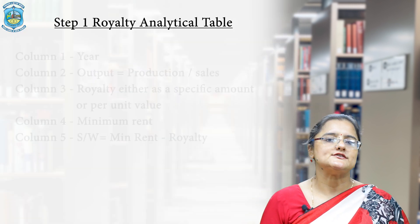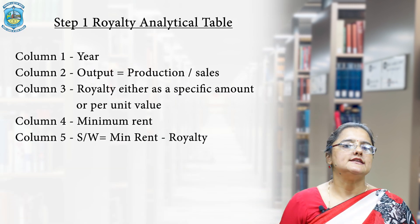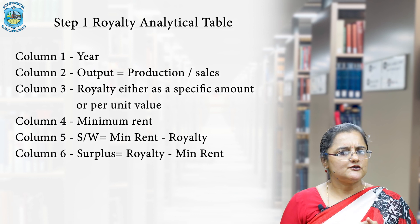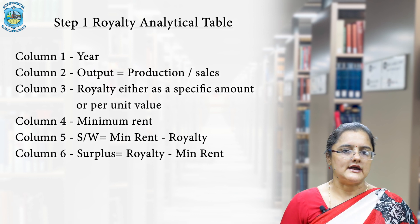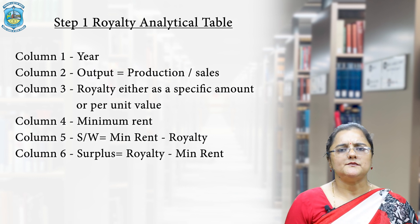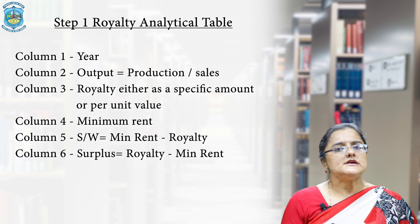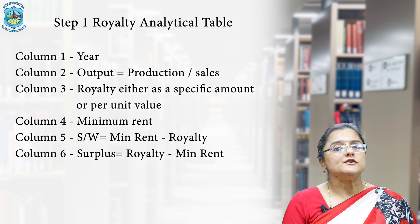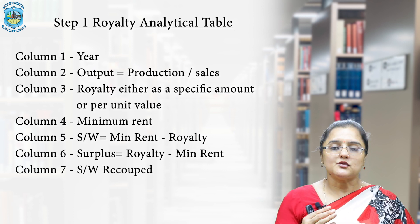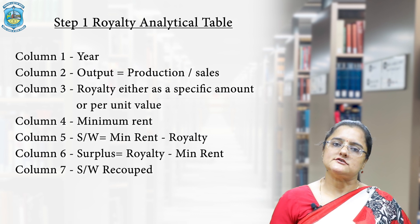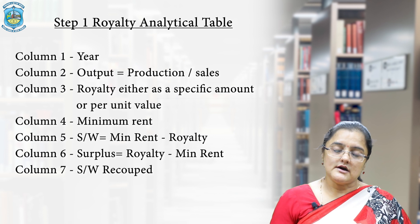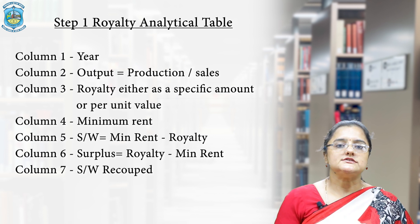When royalty exceeds minimum rent, we call this situation surplus. The sixth column is surplus — the excess of royalty over minimum rent. Remember that surplus has no accounting effect; it is only used to fill the next two columns. The seventh column is short working recoupment, which depends on the short working recoupment condition mentioned in the question.